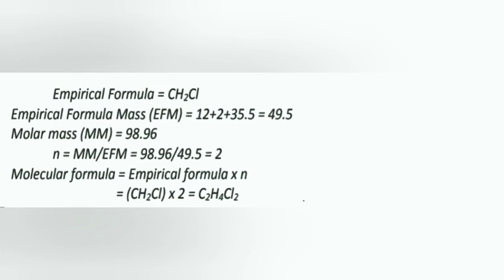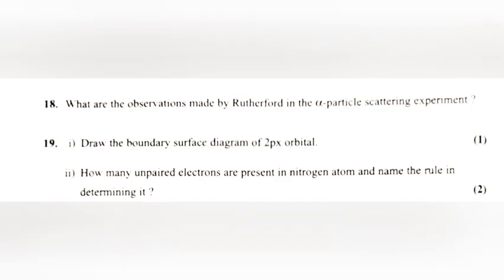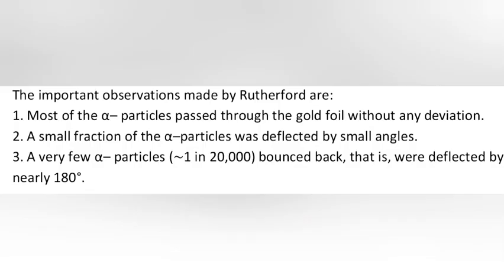Molecular formula equals C2H4Cl2. Question 18: What are the observations made by Rutherford in the alpha particle scattering experiment? Answer: Most of the alpha particles passed through the gold foil without any deviation. A small fraction of the alpha particles was deflected by small angles. A very few alpha particles bounced back, that is, were deflected by nearly 180 degrees.